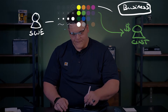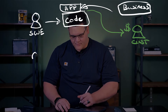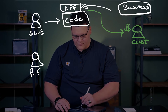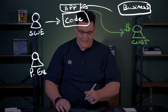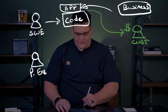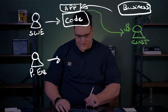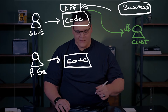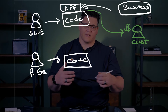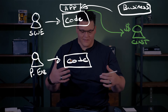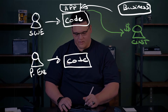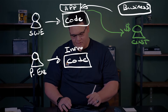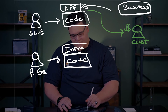Then we have our platform engineer — I'll use P-Eng for short here. Now, like a software engineer, the platform engineer also writes code. But instead of that code being written for an app to sit on top of, the code is written for infrastructure — or just infra for short — infrastructure-related items.